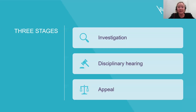It will often, although not always, be helpful for the investigator to prepare a report summarising the steps taken in the investigation, the allegations, and the evidence available in respect of each of the allegations. This basically helps with the conduct of any disciplinary hearing. It's really crucial to the fairness of a disciplinary process in its entirety that the allegations are framed sufficiently clearly and precisely so that the employee can fully understand the case against them.